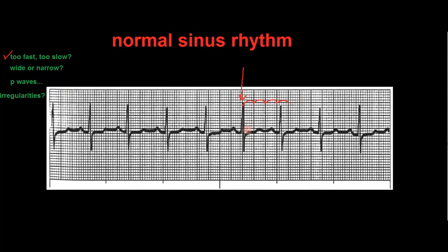Using the 300 method, that would be 300, 150, 100, 75. So it's between 75 and 100, much closer to 100. Let's put this down at 92 beats per minute.